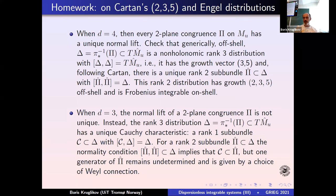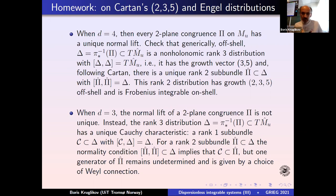If you look for the dispersional Lax pair π̂ in the d=3 case, the normality condition implies that the Cauchy characteristic should be part of it. When you look for generators of π̂, one of them — if normal — is actually the Cauchy characteristic. The other one is not determined, and for this you actually need the Weyl connection. So that's the interpretation in terms of dimensional geometry. And I stop here — thanks for your attention.